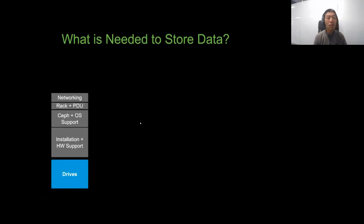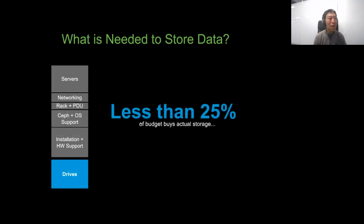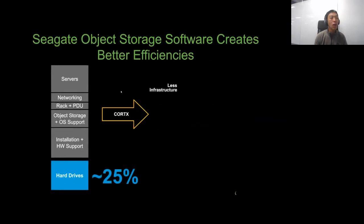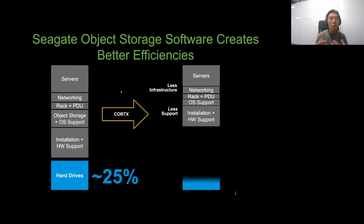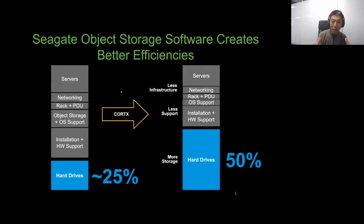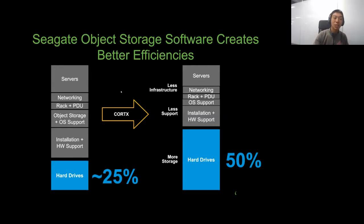So how does Cortex increase storage capacity? Traditionally, a lot of money is spent not just on drives, but on installation, hardware support, operating system support, networking, and servers — so actually less than 25% of the money is spent on storage itself, the physical hard drive. Here at Cortex, if we can reduce overhead costs by making the software 100% open source, then effectively people can buy more hard drives and store more data. That's our goal and mission.